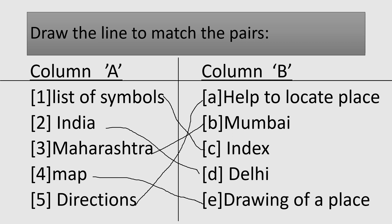Next question: draw the line to match the pairs. Column A and Column B. Column A: list of symbols, India, Maharashtra, map, direction. Column B: help to locate place, Mumbai, index, Delhi, drawing of a place. First one, list of symbols matches with index. Second, India matches with Delhi — Delhi is the capital of India. Maharashtra matches with Mumbai — capital of Maharashtra is Mumbai. Fourth, map matches with drawing of a place — a map is a drawing of a place. Fifth, directions matches with help to locate place.